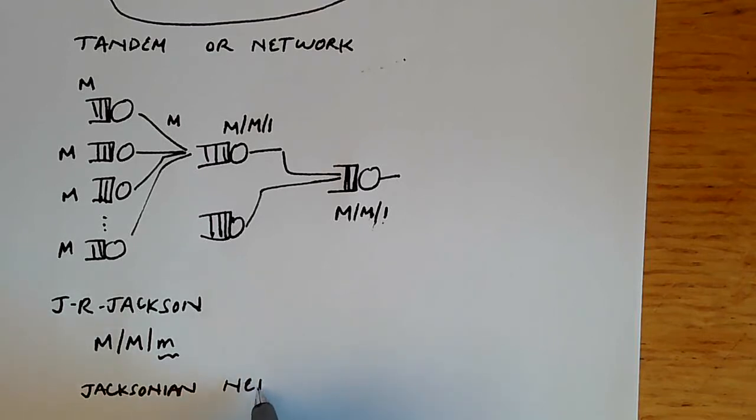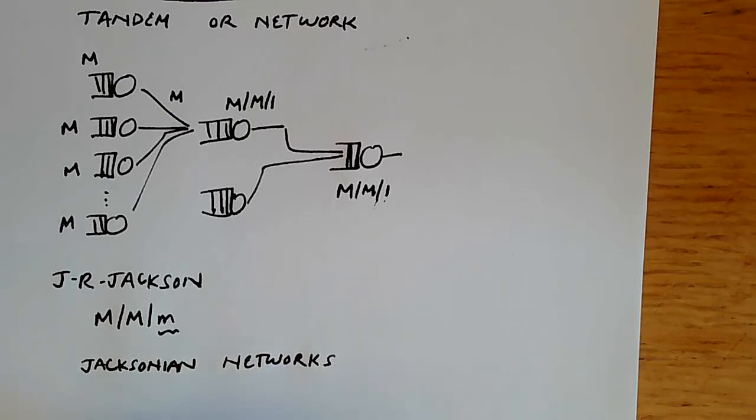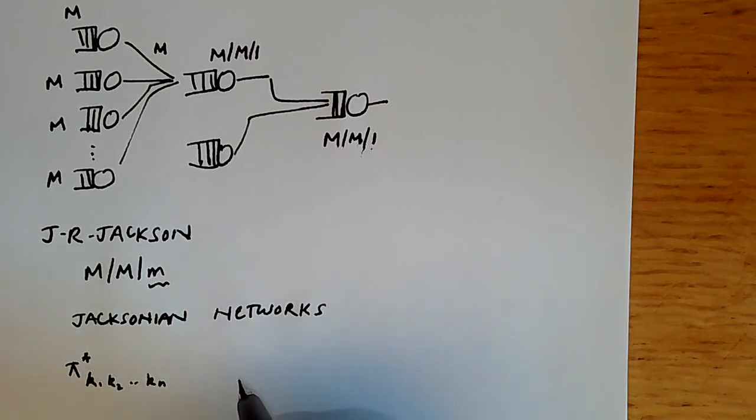That's one reason why we're really quite keen to model all the inputs as Poisson processes. For a Jacksonian network we have a pretty strong result. Let's denote this probability π*(k₁, k₂, ..., kₙ) as the long-term probability that there are k₁ customers in the first node, k₂ customers in the second node, etc. So you have n nodes, and we want to know what is the probability that there are k₁ customers in the first node, k₂ in the second, all the way over here.